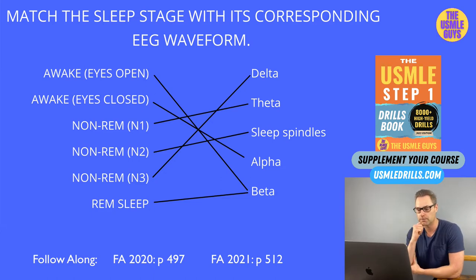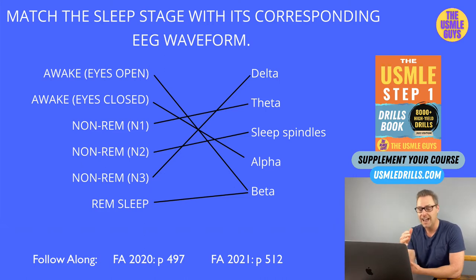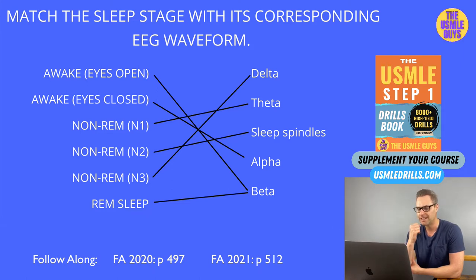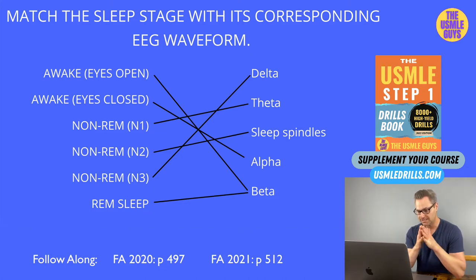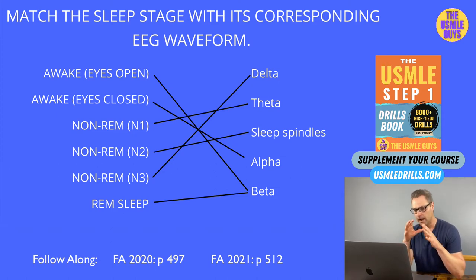The last stage is REM sleep, where you spend about 25% of your time. This occurs approximately every 90 minutes, and the duration increases as you progress through the night. REM is also characterized by beta waves, just like the awake eyes-open stage. The neurological condition associated with decreased REM latency is narcolepsy. During REM sleep, you lose muscle tone, and there are changes in heart rate, blood pressure, and increased acetylcholine release. REM sleep is where penile tumescence, dreaming, and nightmares also occur.